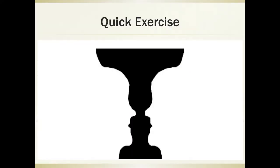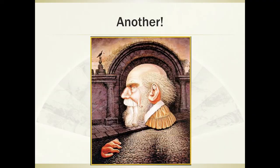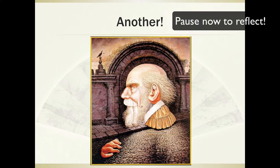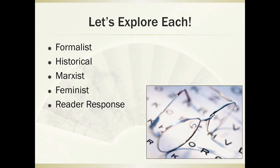Quick exercise: what do you naturally see here? Do you see the black vase outline, or do you look at the white part and see two faces looking at each other? Either way, we're all looking at the same image. But if you focus your attention slightly, you'll see a vase or you'll see faces. Another quick exercise: what do you see here? Let's go ahead and take a look at each lens in specific — formalist, historical, Marxist, feminist, and reader response.